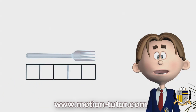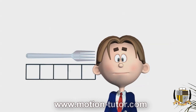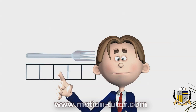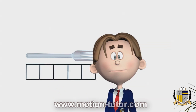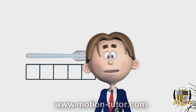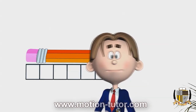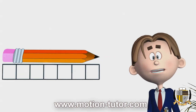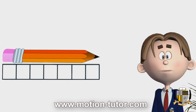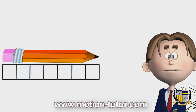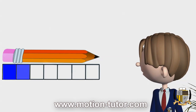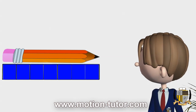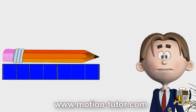So how many boxes long is this fork? Let's count the boxes: one, two, three, four, five — so this fork is five boxes long. And what about this pencil? How many boxes long is this pencil? One, two, three, four, five, six, seven — this pencil is seven boxes long.